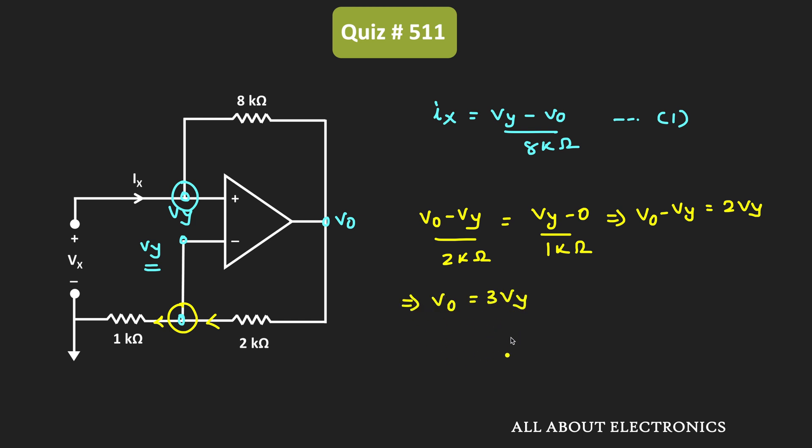So now, let us put this value in the first expression. So if you put this value of Vout in the first expression, then we can write this Ix is equal to Vy minus 3 times Vy divided by 8 kilo ohm. That is equal to minus 2 Vy divided by 8 kilo ohm.